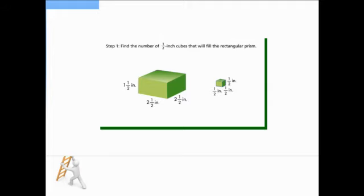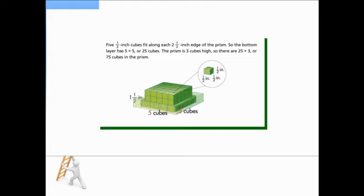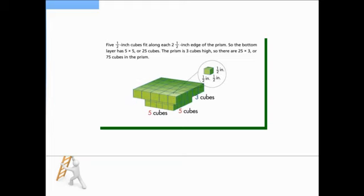Step 1: Find the number of 1/2-inch cubes that will fill the rectangular prism. Five 1/2-inch cubes fit along each 2 and 1/2-inch edge of the prism. So the bottom layer has 5 times 5, or 25 cubes. The prism is 3 cubes high, so there are 25 times 3, or 75 cubes in the prism.